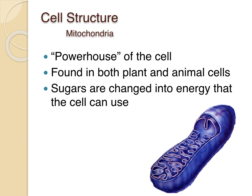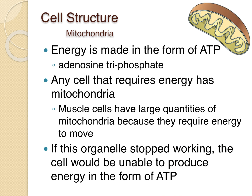The mitochondria is called the powerhouse of the cell. It's found in both plant and animal cells, and sugars are changed into energy the cell can use, specifically ATP (adenosine triphosphate). Cells that require energy have mitochondria — for example, muscle cells like the heart have large quantities because they're constantly moving. If the mitochondria stops, the cell would not be able to produce ATP.